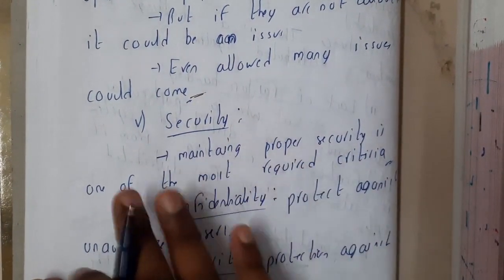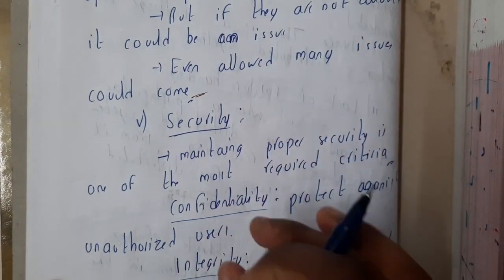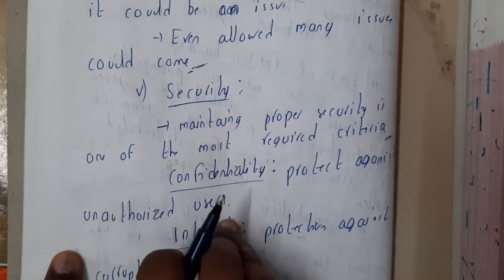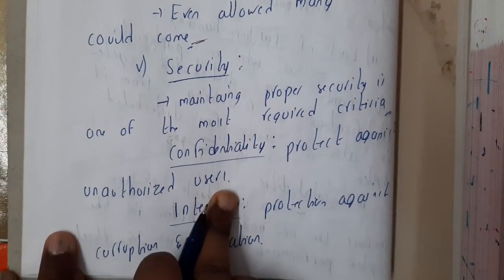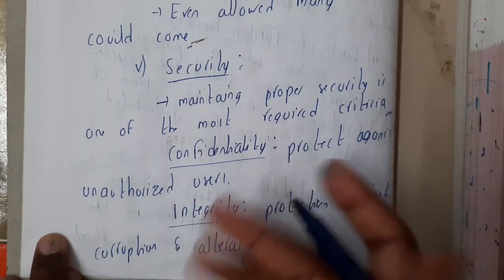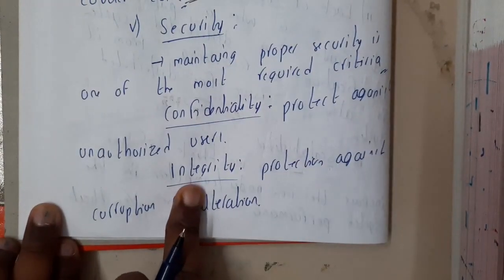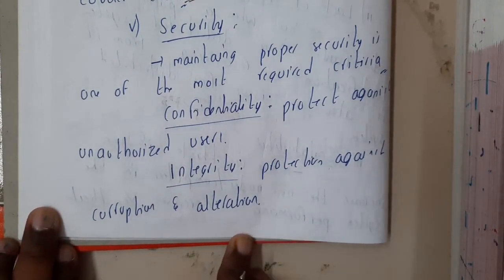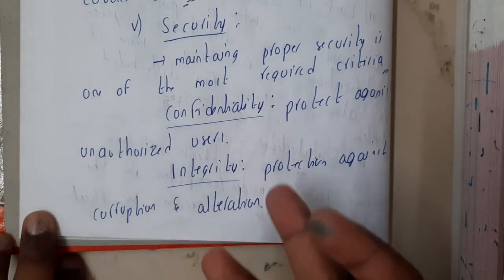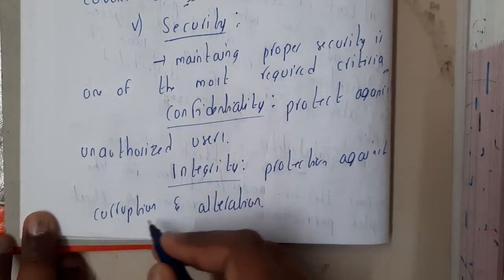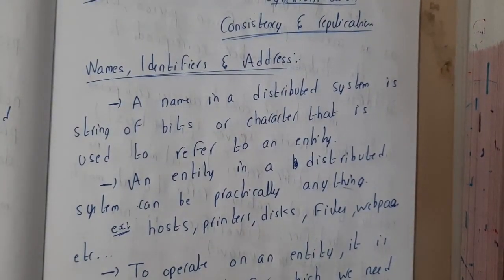Similarly, security is one of the most required things in any kind of system — even your cell phone. Security is one of the most important concerns. In security, you concentrate mostly on confidentiality, which is protection against unauthorized users — I cannot come into your company and access every device. Similarly, integrity is protection against corruption. When you are sending or receiving data, there could be noise which could lead to corruption of files, and that should also be avoided.